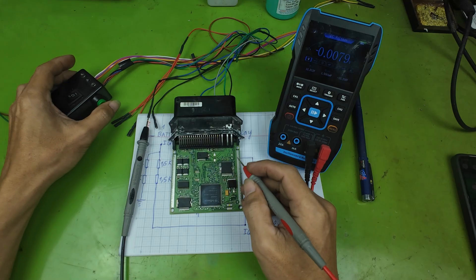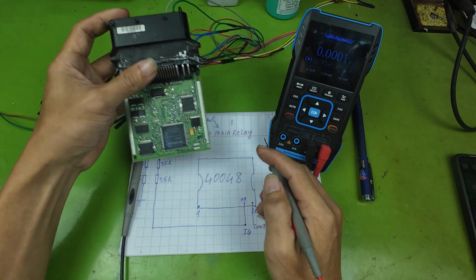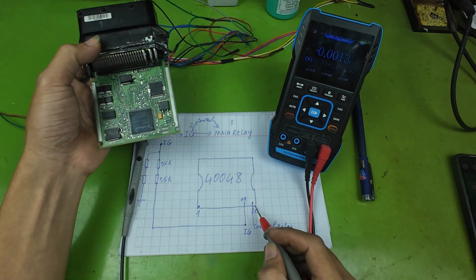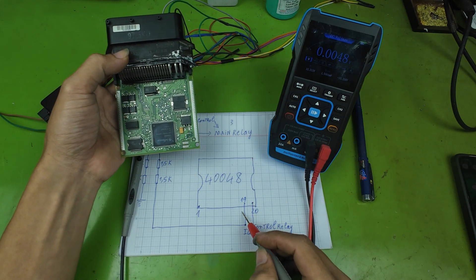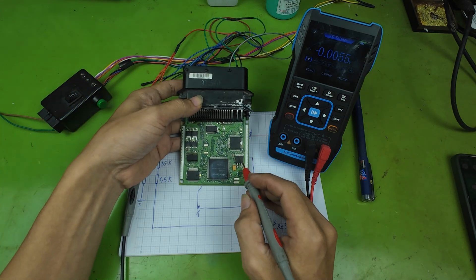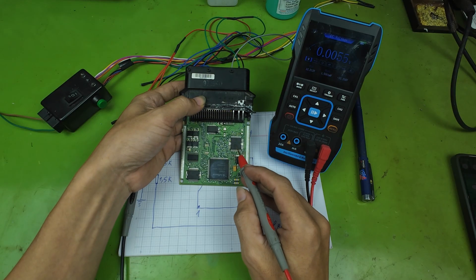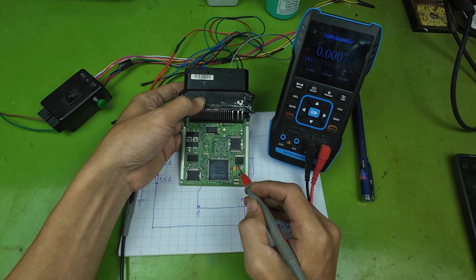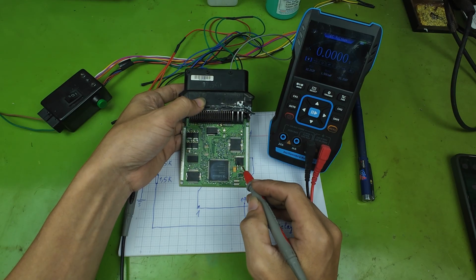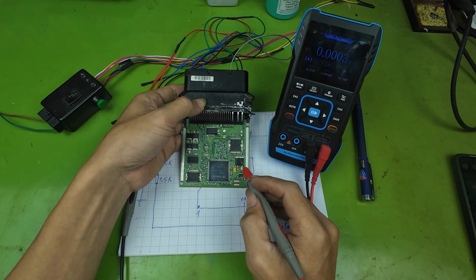After finishing all measurements, I found an important operating principle. When the 12-volt line reaches the IC40048, the IC sends a control signal to the G gate of the 5-volt MOSFET. This signal controls the output voltage of the MOSFET.